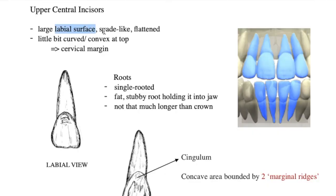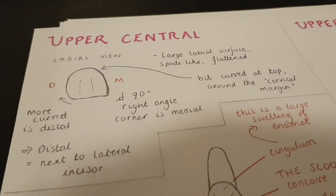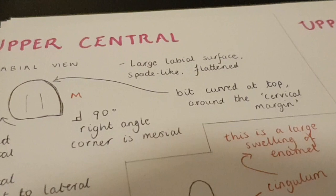The upper central incisor has a large labial surface — really well known, everybody knows this — it's spade-like and flattened. It has a 90-degree angle at the mesial corner and a more curved distal corner, so that's what you can look at to distinguish between left and right. If the distal corner is curved, you know it's next to the lateral incisor. There's a slight curve at the cervical margin — that's just where the crown meets the gum or the root. As for the roots, these are single-rooted fat stubby roots.